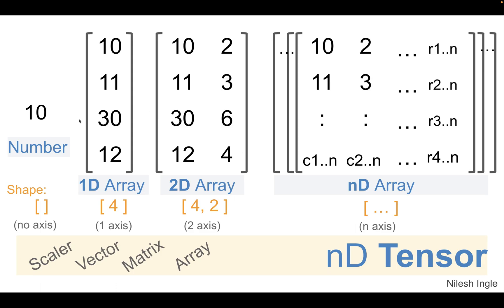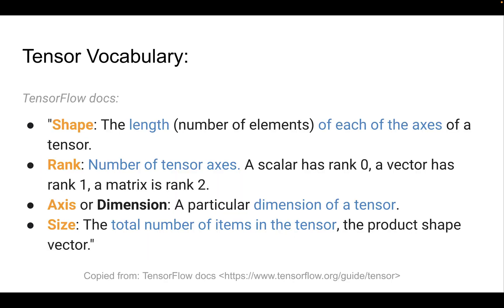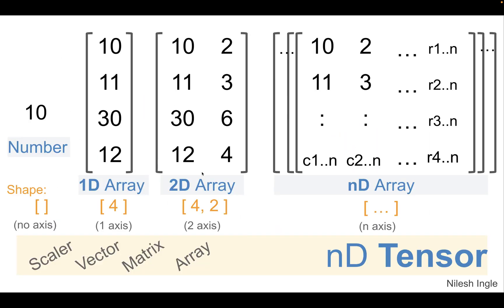On this slide, we see that 10 number is a scalar or just you can call it a number. In TensorFlow language, that is a rank zero tensor. So rank zero, because as we saw in the previous slide, number of tensor axis, because it's just a number, it does not have any axis. So the number of axes is 0 and so it's a rank zero tensor.